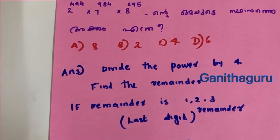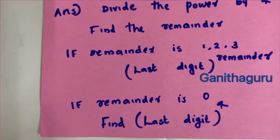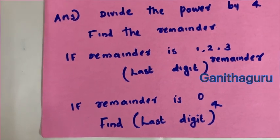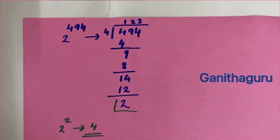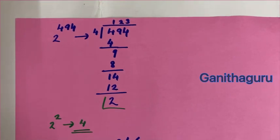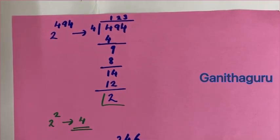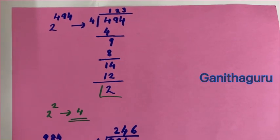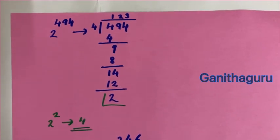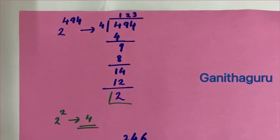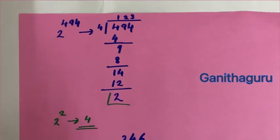Last digit raised to reminder. If the reminder is 0, last digit raised to 4. For 2 raised to 494: 494 divided by 4 gives remainder 2. So last digit is 2 raised to 2, which is 4.